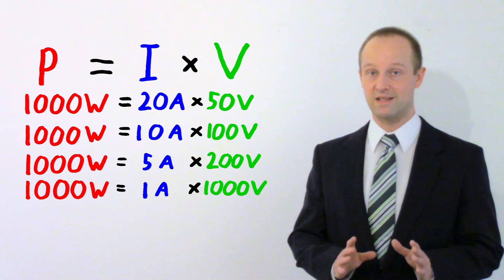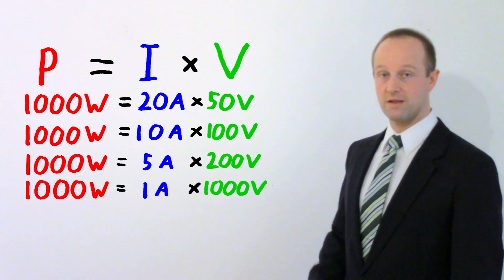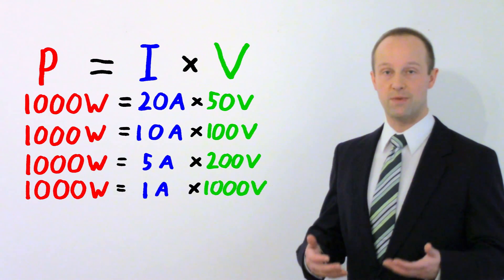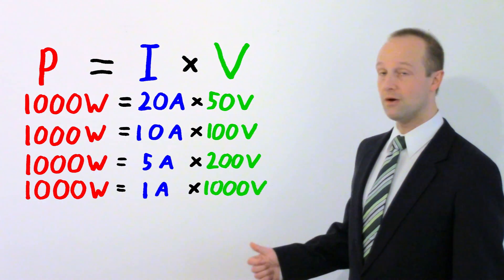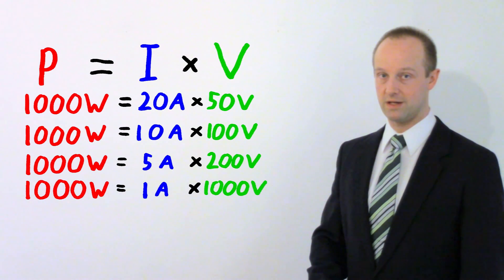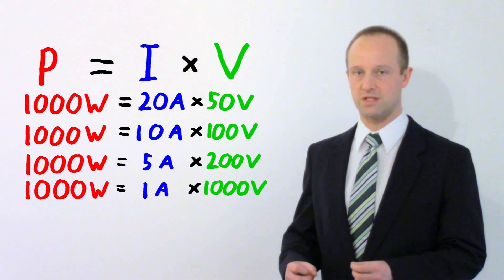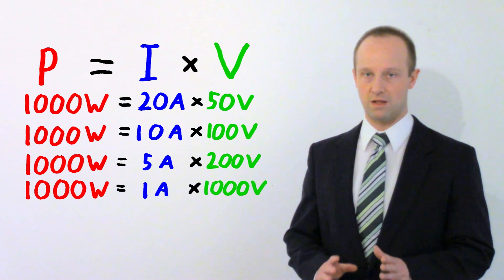And this is the really clever thing. That as the potential difference increases through a transformer, as you step up that potential difference, you're actually stepping down the current by the same amount. So big potential differences which we use to distribute electricity have very very low current.